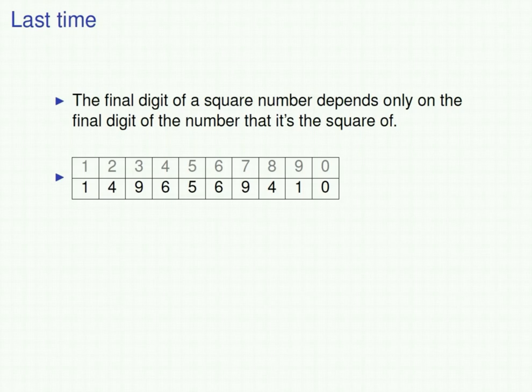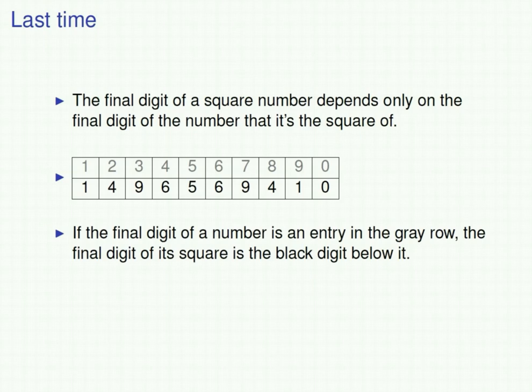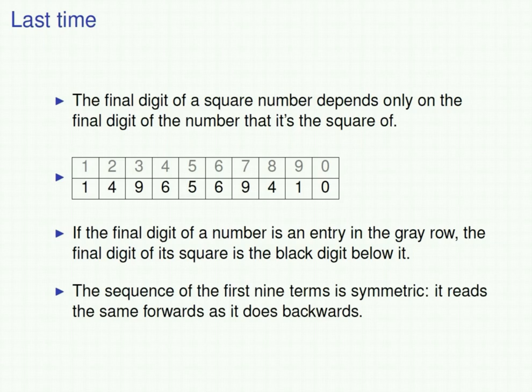We organized our finding in a table as pictured. The meaning of the table is that if the final digit of a number is an entry in the gray row, then the final digit of its square is the black digit below it. So for example, if you have a number that ends in 4, its square ends in 6. We also found that the sequence of the first nine terms of the black row is symmetric — it reads the same forwards as it does backwards.